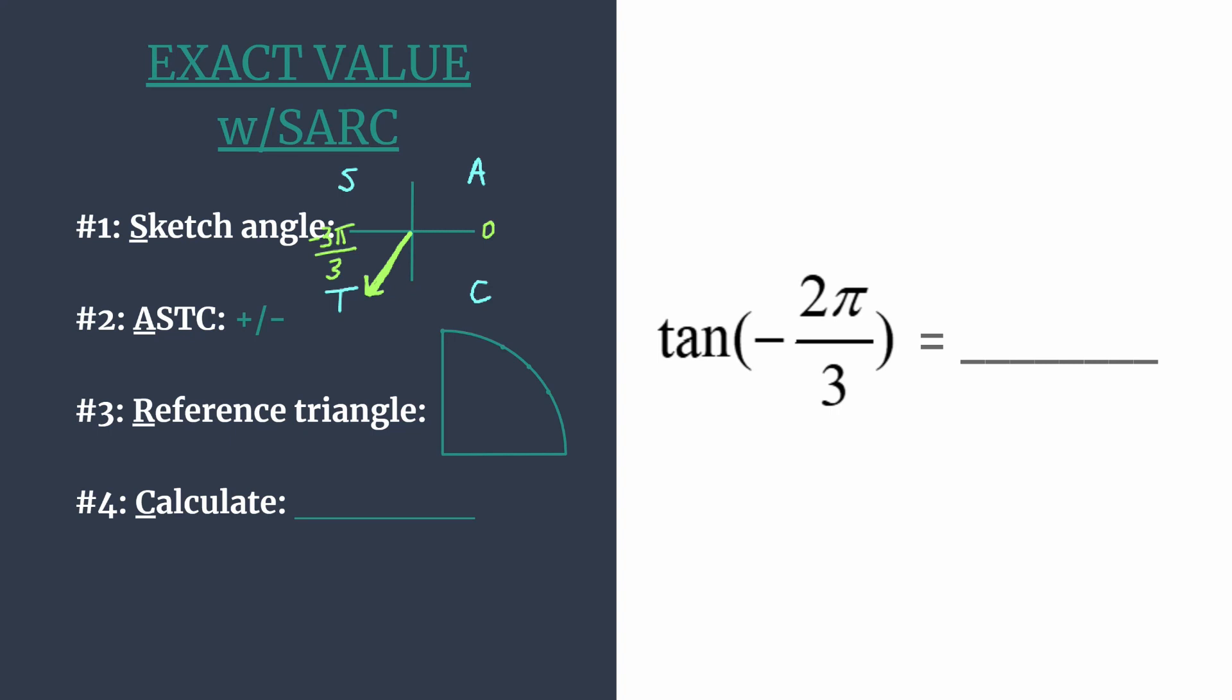We can already go ahead and make a note here. We're trying to find the tangent of negative 2π over 3—our final answer is going to be positive. So when we do calculations and find our reference triangle and anything else from this step on, we don't need to worry about negative signs, and that just takes away another possibility for error.